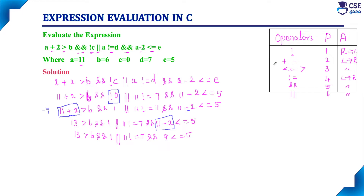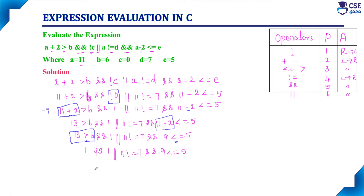Now arithmetic operators are done. Next priority is relational operators: greater than and less than or equal to, both equal priority, so we use associativity left to right. The leftmost is greater than, so we evaluate 13 greater than 6 — condition is true, result is 1. Then 9 less than or equal to 5 — condition is false, result is 0.